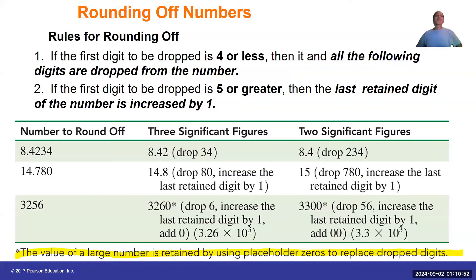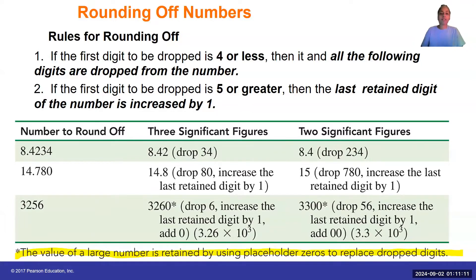The round-off rules are: if the digit to be dropped is four or less, then all following digits are dropped and we do not round up. If the first digit dropped is five or greater, the last digit increases by one. For example, if I want to round off 8.4234 to three significant figures, I drop off the three and four and I'm left with 8.42.